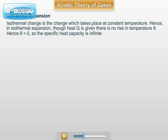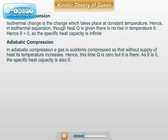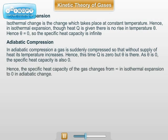In the extremely opposite case, that is in case of adiabatic compression, a gas is suddenly compressed. As a result, its temperature increases without supply of heat. In such a case, Q is zero but theta is not zero; hence, specific heat S becomes zero. Thus, for a gas, the specific heat changes from zero to infinity, from adiabatic compression to isothermal expansion. Hence, it is necessary to define specific heat separately for constant volume and for constant pressure conditions.